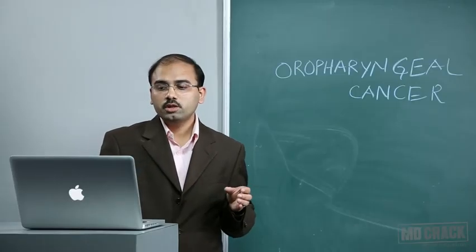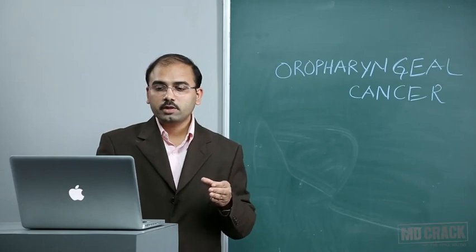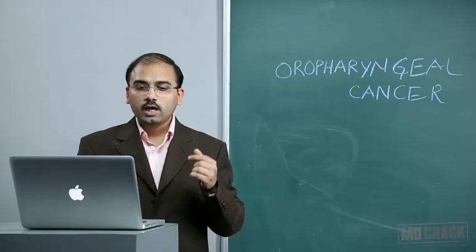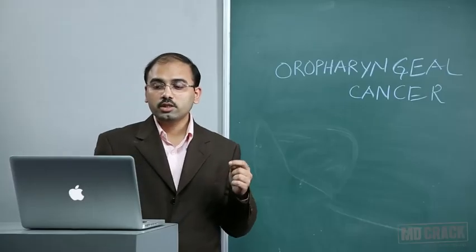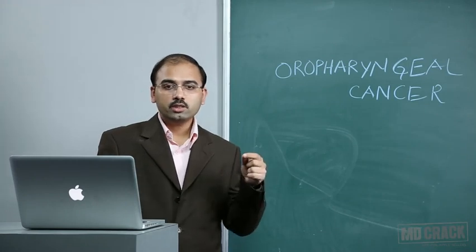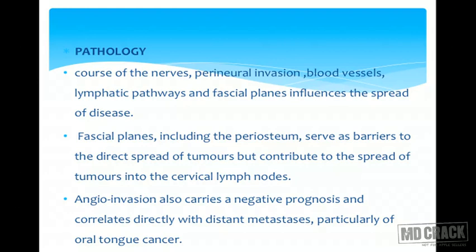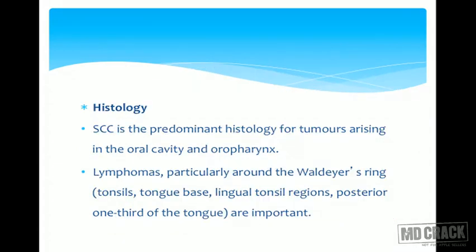Fascial planes, including periosteum, serve as barriers to direct spread of the tumor, but they contribute to the spread of the tumor into cervical lymph nodes, as they have good lymphatics along which lymph node metastasis can occur. Angioinvasion also carries a negative prognosis and correlates directly with distant metastasis, particularly in the tongue which has more blood supply. Histologically, squamous cell carcinoma is the predominant histology for tumors arising in the oral cavity and oropharynx.